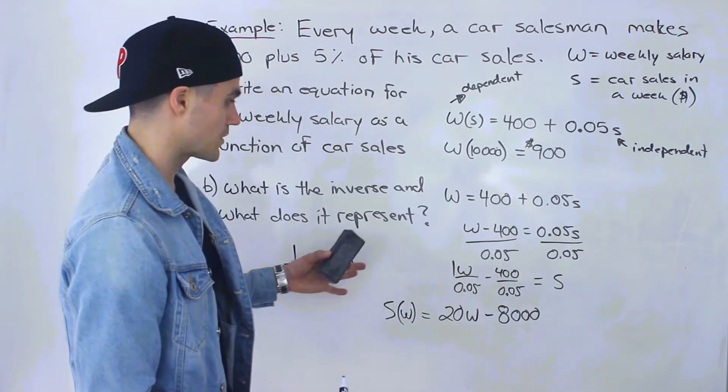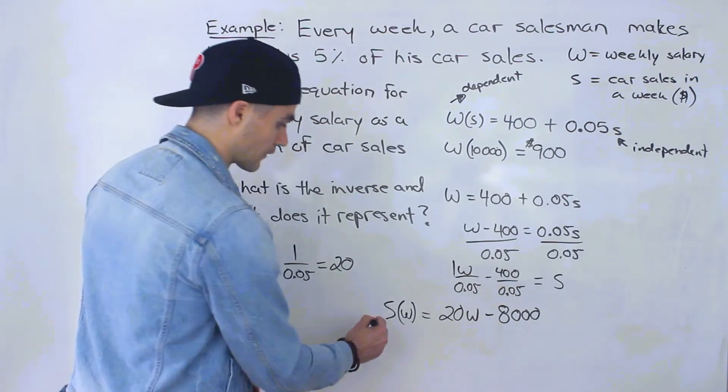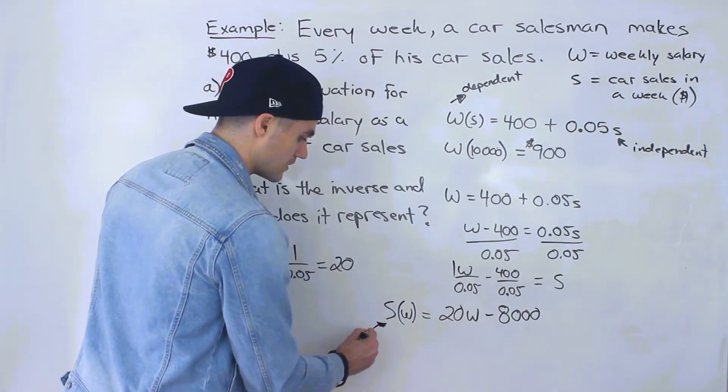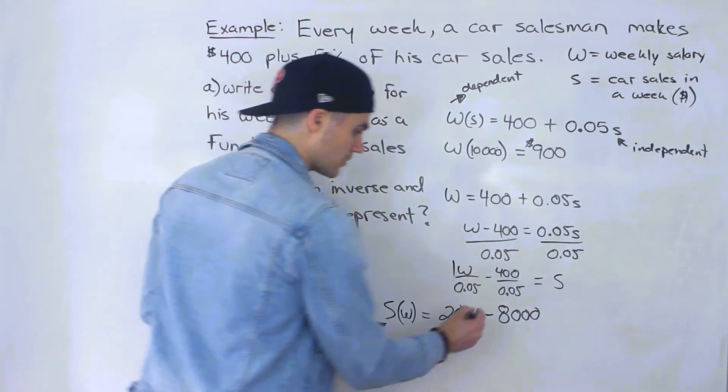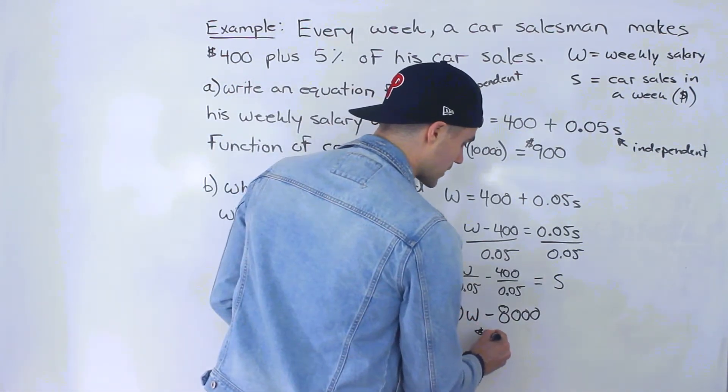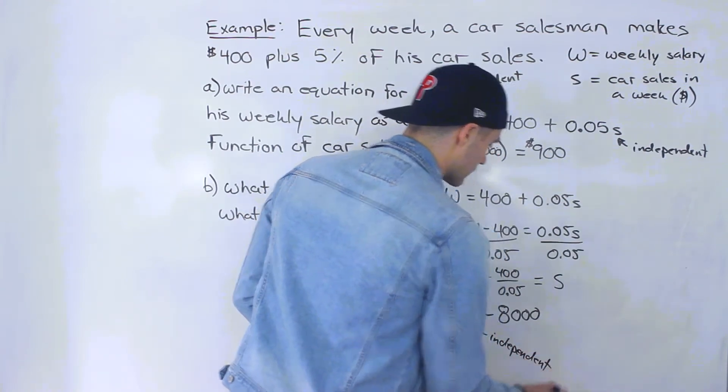Okay, and that's what it represents. It represents the car sales as a function of the weekly salary. So now the car sales is the dependent variable and the weekly salary is the independent variable.